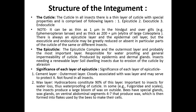The second layer is the wax layer. Hydrocarbons constitute 90% of this layer, which is important for preventing water loss and waterproofing the cuticle. In some Fulgoridae and scale insects, a large bloom of wax is produced on the outside. Bees have a special wax gland on the ventral abdominal segments 4 to 7 that produces wax, which is then formed into flakes used to make their cells.